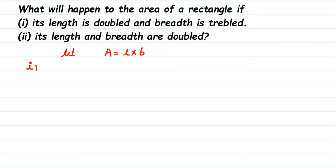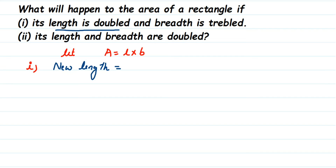For the first question, length is doubled. This l is the actual length — we are not modifying it. If the length is doubled, the new length will be equal to 2 into l, or 2l. Similarly, new breadth will be equal to — here they are increasing the breadth three times, it's tripled, which means it will become 3 into b, or 3b.